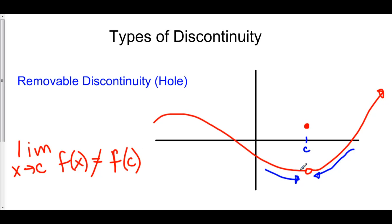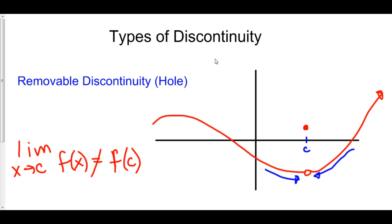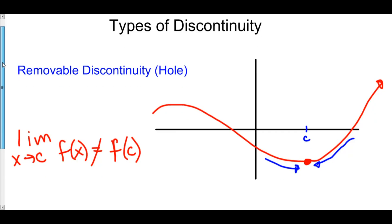Why is this called a removable discontinuity? Because we can actually remove the discontinuity quite easily — we can plug up the hole. We can plug it in right here and get rid of the other function value. Boom, we've plugged in the hole, and now this is in fact continuous. Let's take a look at how we can plug in the hole.